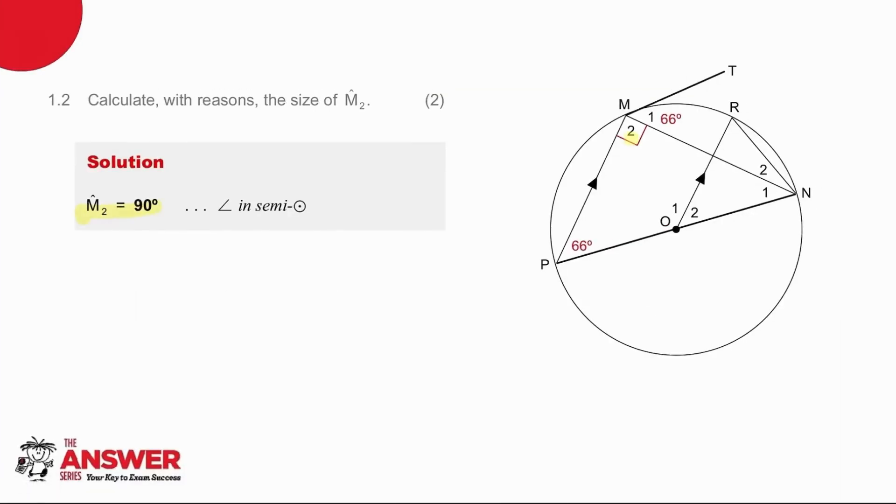So angle M2 is 90. Angle in semi-circle.